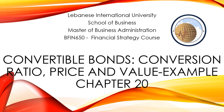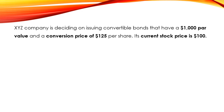Hello everyone. In this video we are going to show you an example about convertible bonds — conversion ratio, price, and value. XYZ company is deciding on issuing convertible bonds that have a par value of $1,000. The conversion price is $125 per share.